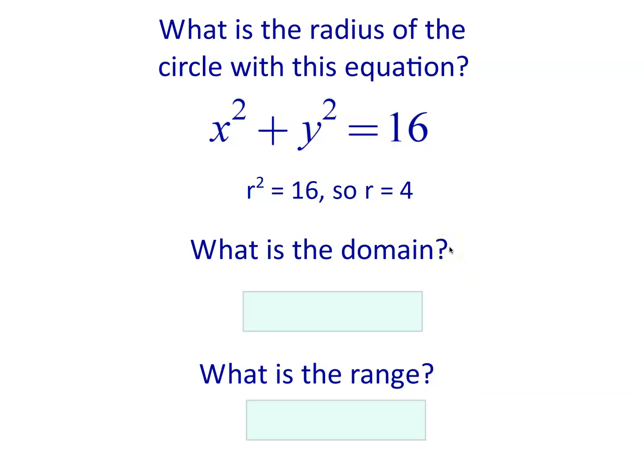Okay. Stop the video, have a think about what's the domain and the range for this function. Now, because it's a circle of radius 4, and it's centered at the origin, the center of the circle is at 0, 0, then x can be as small as negative 4, and as large as positive 4. So the domain is negative 4 is less than or equal to x is less than or equal to 4. And because the circle is symmetric, you can say the same thing for y, that the range is between negative 4 and positive 4, including 4.